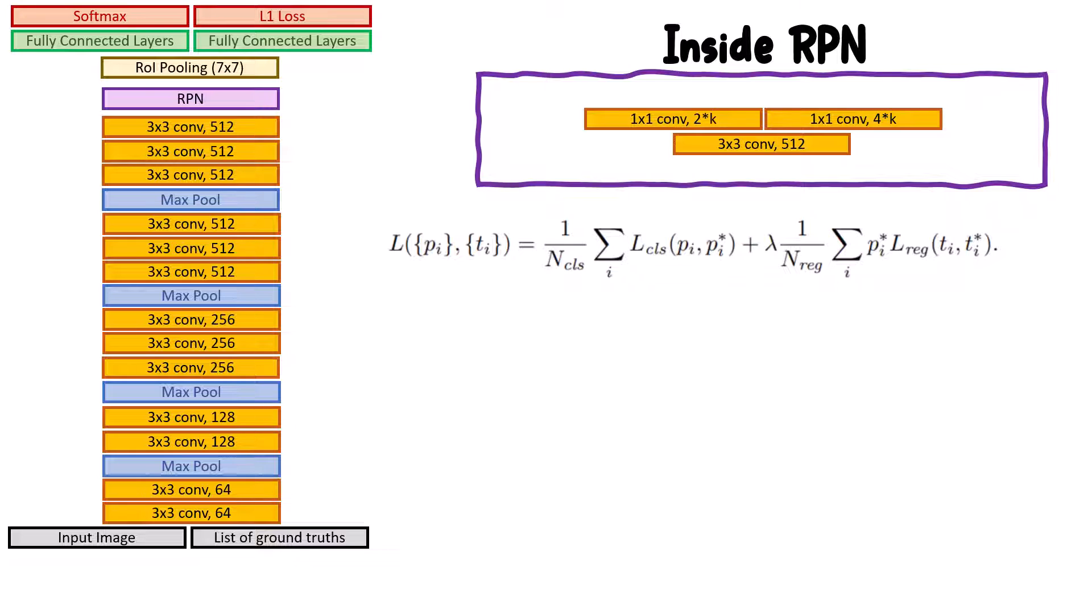If we consider the second term, we see there is pi star behind this regression loss. That basically means we only apply regression loss if there is an object in this area. If there is an object, then pi star is one; otherwise it's zero. If it's zero, we don't care about the regression loss anymore.